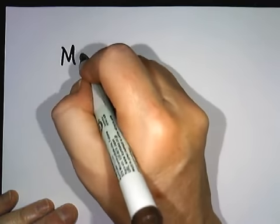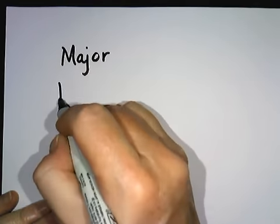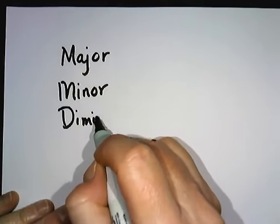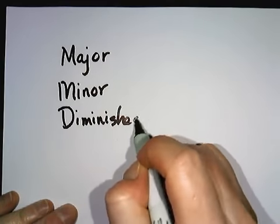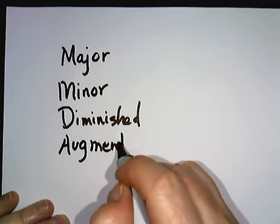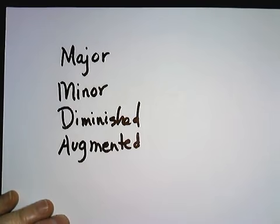It is possible to have qualities of triads just like we had qualities of intervals. And the words are the same. We have major triads, minor triads, diminished triads, and augmented triads. So those four words also apply to three note groups.